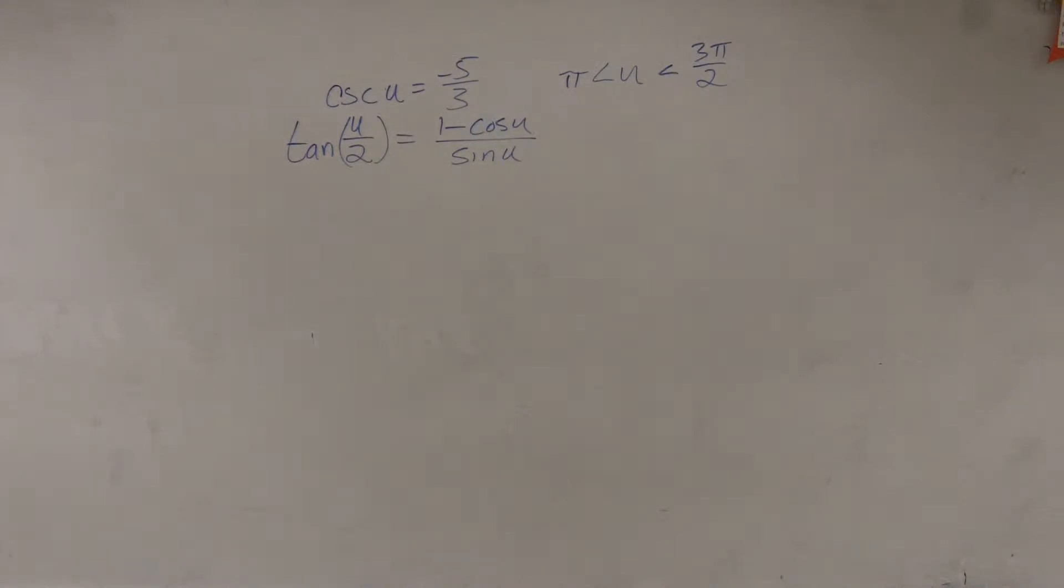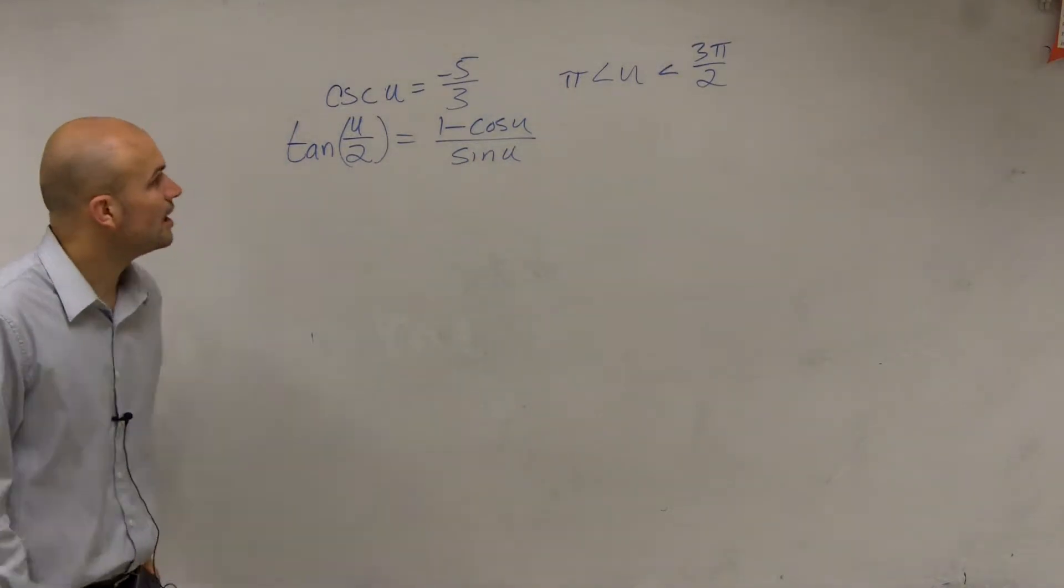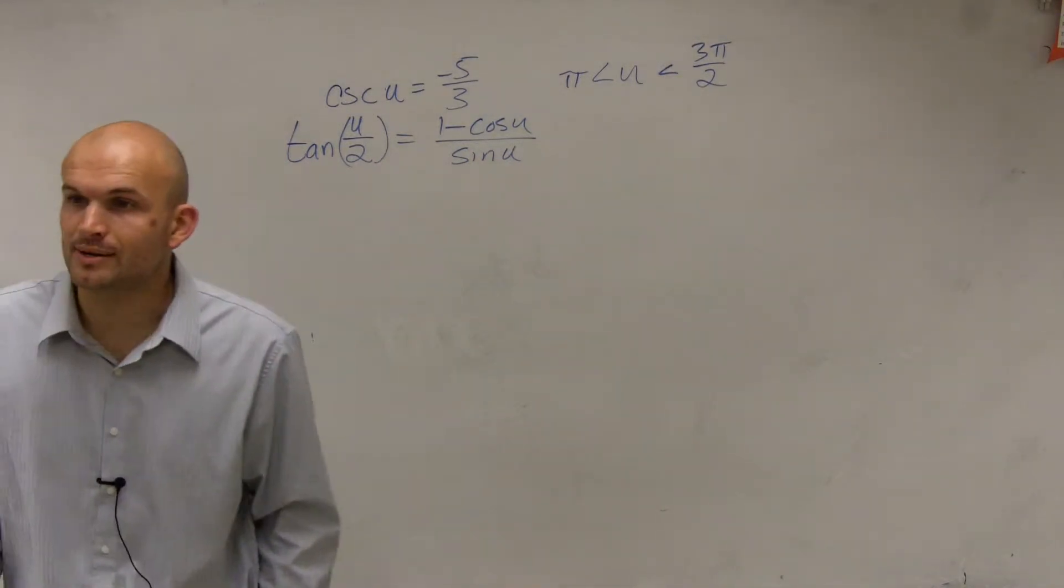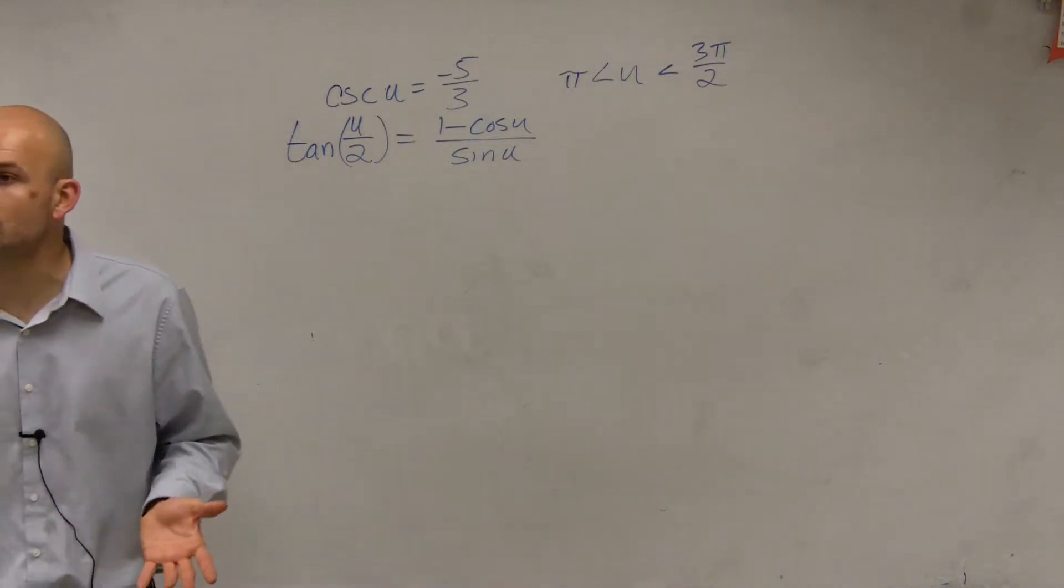We're not evaluating for anything on our unit circle. Right now we know that cosecant u equals negative 5 over 3, but we're not concerned with anything. We don't know exactly what our point is going to be on the unit circle.